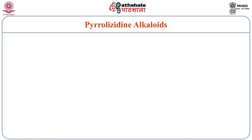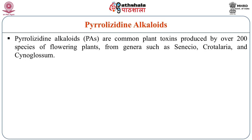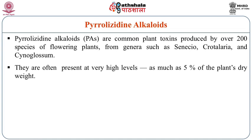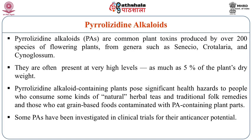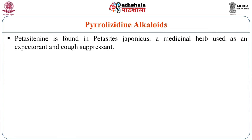The next component is pyrrolizidine alkaloids. Pyrrolizidine alkaloids are common plant toxicants produced by over 200 species of flowering plants from genera such as Crotalaria and Cynoglossum. They are often present at very high levels — as much as 5% on a dry weight basis. Pyrrolizidine alkaloid-containing plants pose significant health hazards to people who consume certain herbal teas, traditional folk remedies, and grain-based foods contaminated with pyrrolizidine alkaloid-containing plant parts. Some have been investigated in clinical trials for their anti-cancer potential.